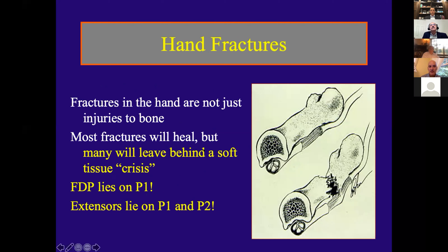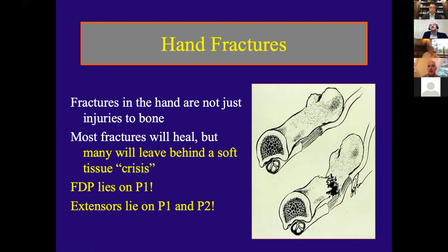The FDP lies directly adjacent to the proximal phalanx, so when a fracture of the proximal phalanx heals, it often entraps the FDP tendon. I've seen two or three younger people who've had to have tendon releases — adhesions removed from the FDP — to regain active range of motion. The extensors lie very tightly on the dorsum of the proximal and middle phalanges, so any fracture there can adhere to the extensor tendons as well.